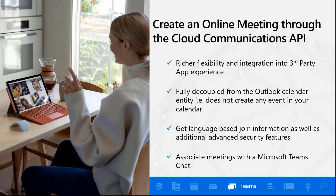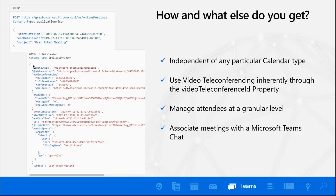One of the really cool things is that as we work in a distributed fashion with people all over the world who speak different languages, you can actually create language-based information as part of that meeting experience, so it comes up in the person's native language rather than in English. Another great feature is the ability to spawn a meeting from a Microsoft chat. Video teleconferencing is done inherently through the video teleconference property, though it does require that you have the licenses for it. And you're able to manage attendees at a granular level — for example, whether an attendee can bypass the lobby and other security enablements around the user.